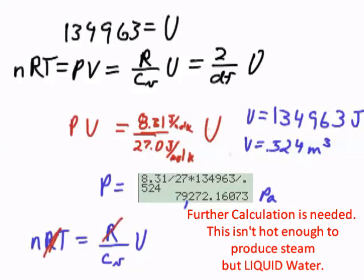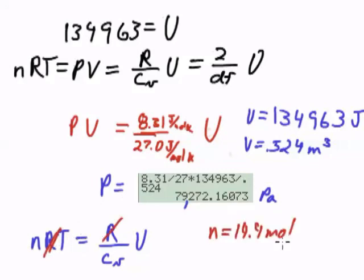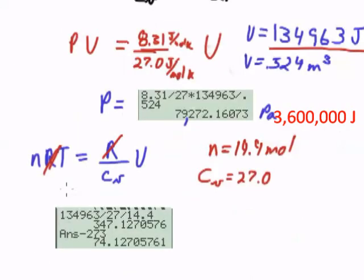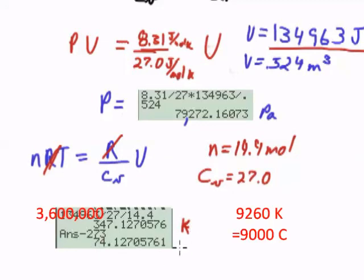And we'll have N is 14.4 moles. C sub V is 27.0. And U is 134,963. So the temperature has gone up to a whopping 347 Kelvin, which is 74 degrees Celsius.